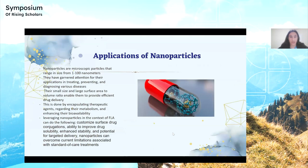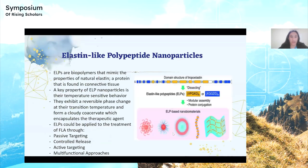In order to circumvent this, I chose to focus on nanoparticles, which range in size from 1 to 100 nanometers. They have garnered attention because they treat and prevent various diseases, such as different types of cancers. I chose to leverage nanoparticles in the context of free-living amoeba, specifically focusing on elastin-like polypeptide nanoparticles. Elastin is a protein found in connective tissue, and ELP nanoparticles mimic natural elastin. They can be leveraged in treatment through active targeting, multifunctional approaches, and passive targeting.